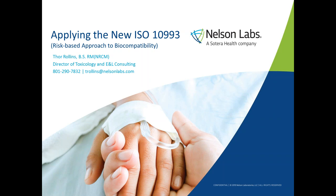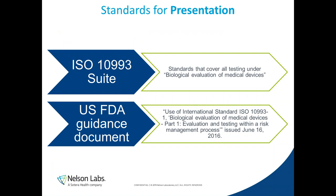We're also going to look at how that correlates with the relatively new FDA guidance document from 2016, and see how we can use both of these documents to evaluate biocompatibility. These are the two documents I mentioned: the 10993 suite is the Bible of biocompatibility — most people go there first when they think of biocompatibility. The suite contains, soon to be, 23 different parts.